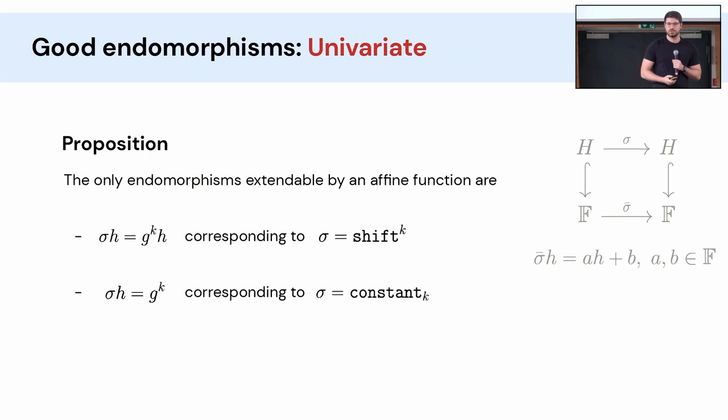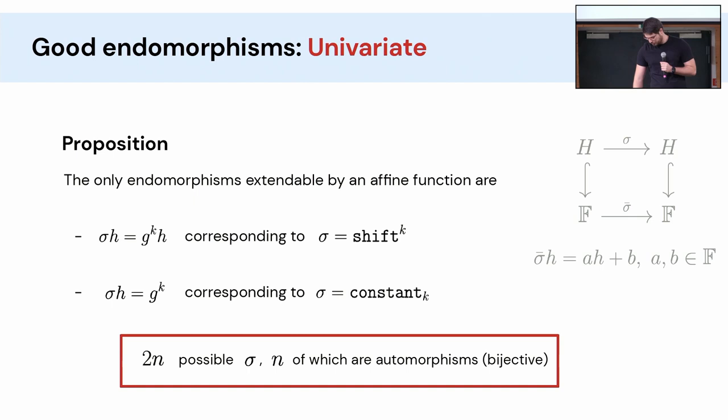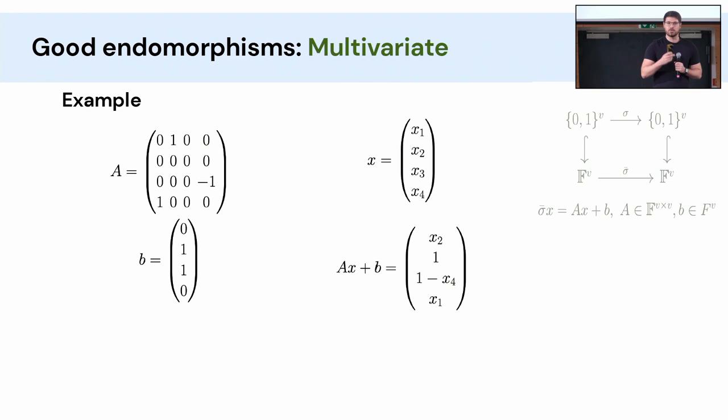So that's all very abstract. What kind of sigma can you actually choose in practice? In the univariate case, you can actually prove that the only sigma that works are the shift to the k and the constant at k. So it turns out that the extensions of AIR I mentioned before are actually the only extensions you can do. It's just looking up the k-th next row or looking up a constant row. You cannot do anything else if you want to keep the same base proving system. And if you count how many sigmas that amounts to, there's like 2n, n of which are bijective.